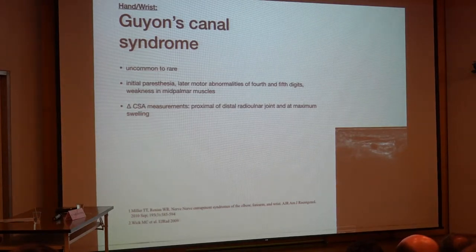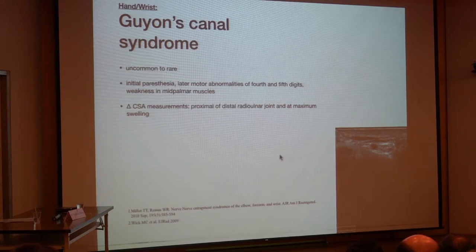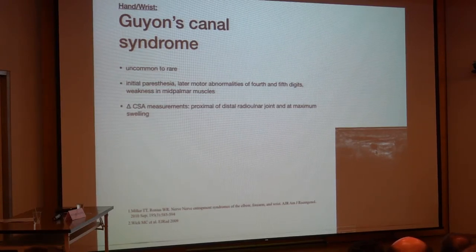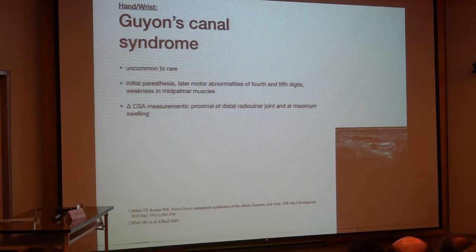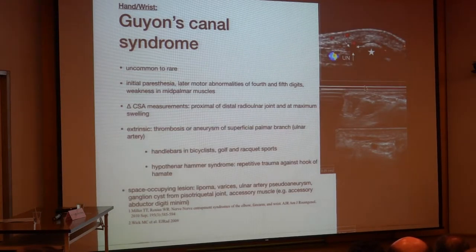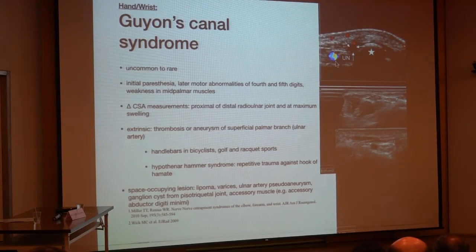Moving to the ulnar nerve at the wrist: entrapment here has been described as uncommon to rare. It presents with typical paresthesia of the fourth and fifth fingers. A delta cross-sectional area measurement is very helpful — we take the maximum CSA at the Guyon's Canal, which here shows 9 mm², and compare it to a more proximal measurement of 5 mm², so it is quite doubled in thickness. Close to the pisiform, we can see a ganglion compressing the ulnar nerve close to the ulnar artery.